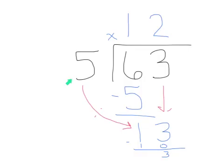5 does not divide into 3, therefore, we have a remainder of 3. So the answer is 12 with a remainder of 3.